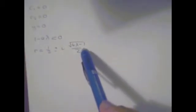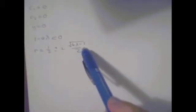Finally, we consider the case where 1 - 4λ < 0. This gives complex roots to the auxiliary equation: r = 1/2 ± i·√(4λ-1)/2. This is obtained by taking a factor of -1 out from under the square root. This gives the general solution y = c₁e^(x/2)sin(√(4λ-1)/2 · x) + c₂e^(x/2)cos(√(4λ-1)/2 · x).